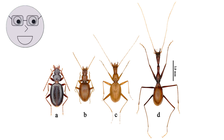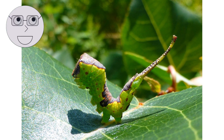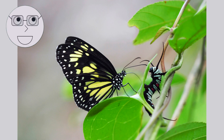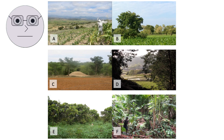Insects have a variety of adaptations that allow them to survive in different environments. Some insects have camouflage to blend in with their surroundings, while others have bright colours to warn predators of their toxicity. A praying mantis blending in with leaves, a monarch butterfly with bright orange and black wings. Insects also have a wide range of behaviours, from solitary to social. Some insects live alone, while others form colonies with thousands of individuals. A solitary bee building a nest, a colony of ants working together to gather food.